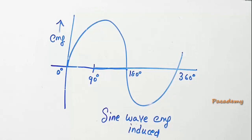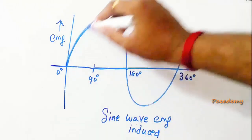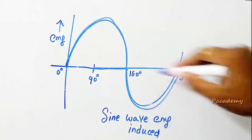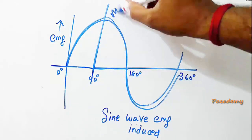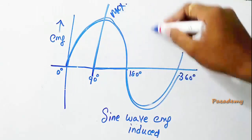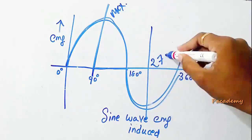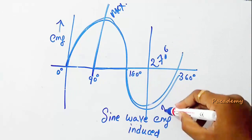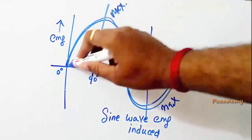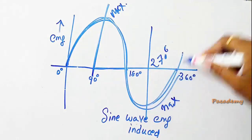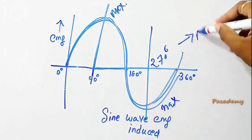When the coil makes a complete revolution in the magnetic field, a sine wave EMF is induced. When the coil is at 90 degrees with respect to the field, a maximum EMF is induced. When it is at 270 degrees with the field, a negative maximum is induced. For a complete revolution, a sine wave is formed which represents the AC current flowing through the load.